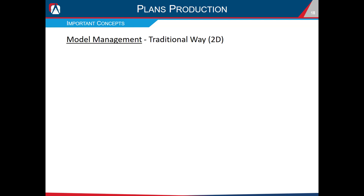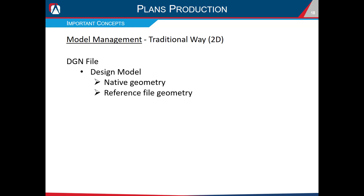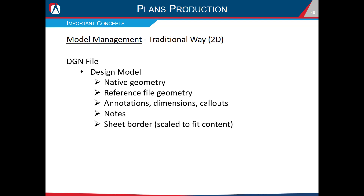Another important concept is model management. In the traditional 2D way, we always have our DGN file, and inside that DGN file is a design model. In the design model we have all our native geometry, reference file geometry, annotations, dimensions, callouts, notes, and sheet borders usually scaled to fit the content. As far as printing goes, we usually just print from the design model.